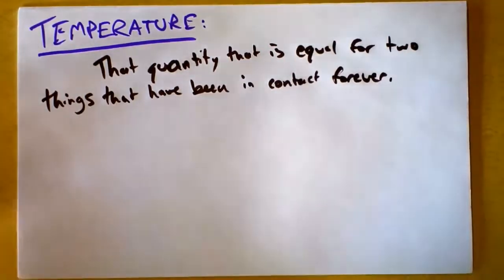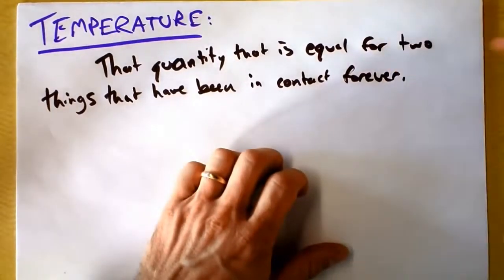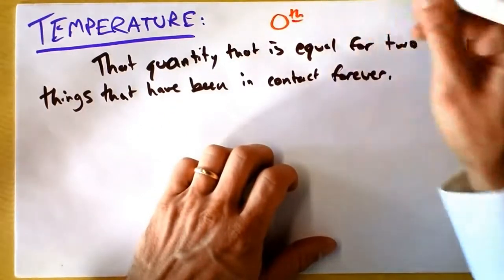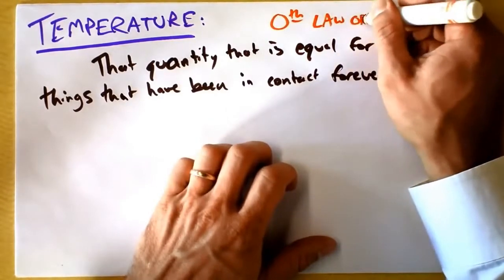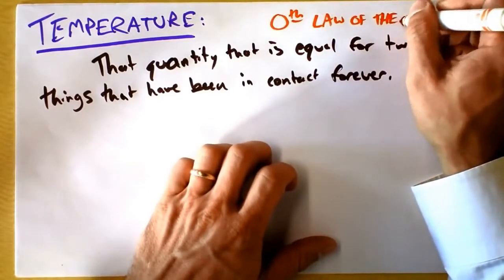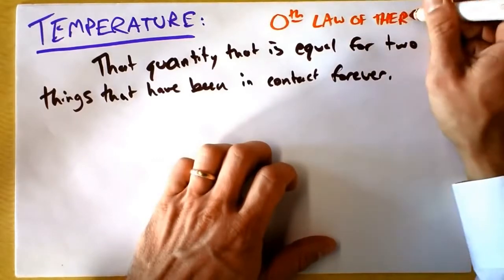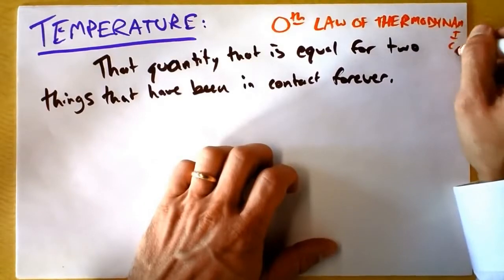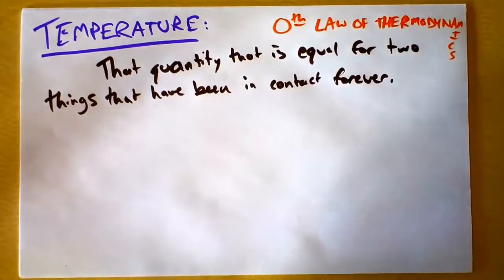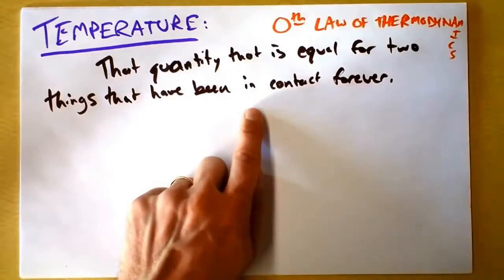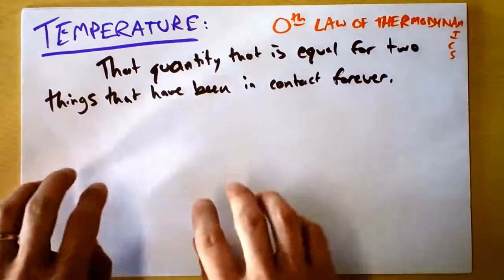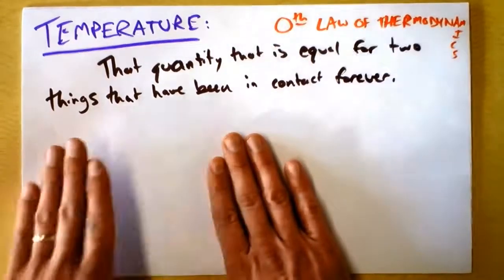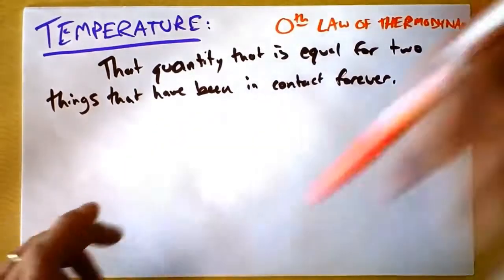Some people call this the zeroth law of thermodynamics. There are three laws of thermodynamics — one, two, and three — and this is of course how they all start, so it's the zeroth law. Thermodynamics means, I guess, the study of the flow of heat. And one way of saying that temperature is the quantity that's equal for two things that have been in contact forever is that if one substance has a high temperature and another has a low temperature, then heat will flow from the hot thing to the cold thing.